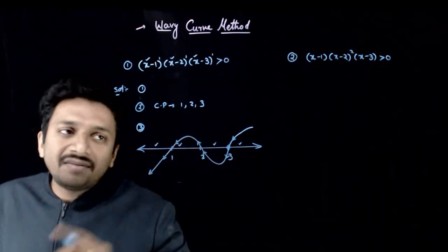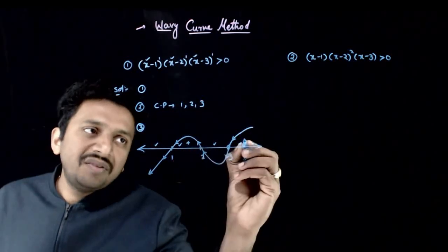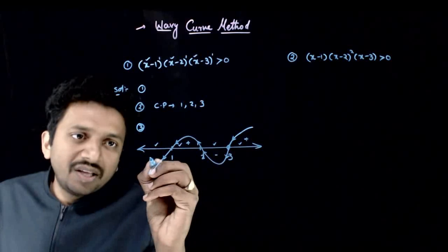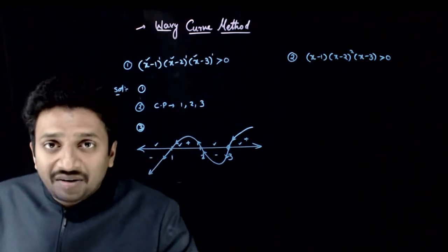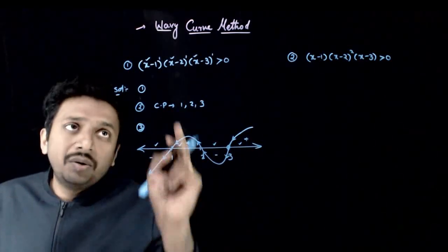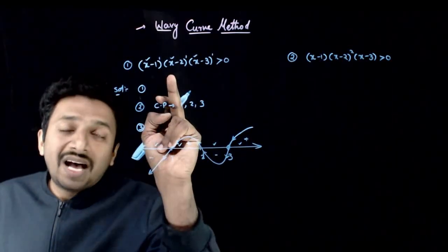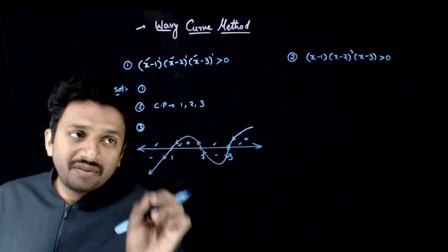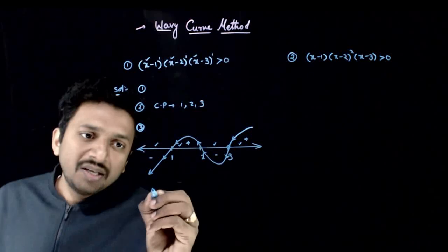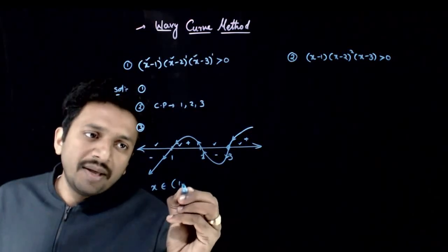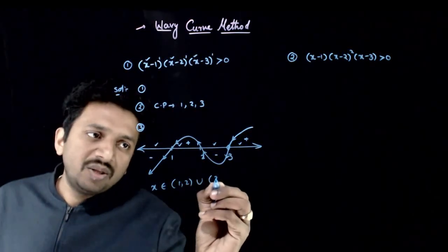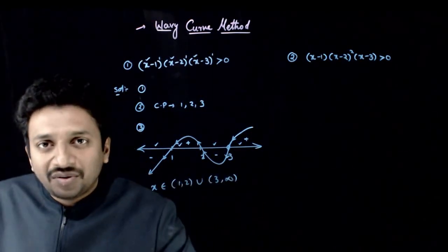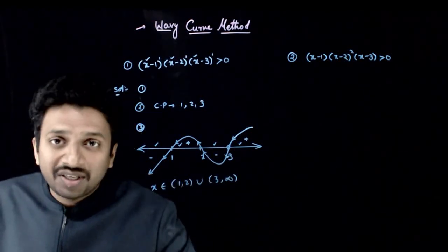This is the wavy curve. Wherever the wavy curve is above the x-axis, that is the positive interval; wherever the curve is below the x-axis, that is the negative interval. Since we want this inequality to be positive, the answer is x belongs to (1, 2) union (3, infinity). That is the solution to this inequality.